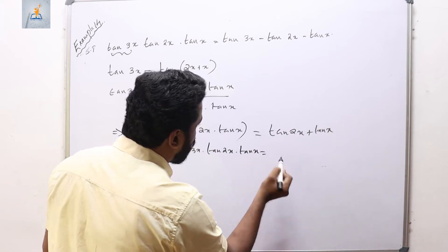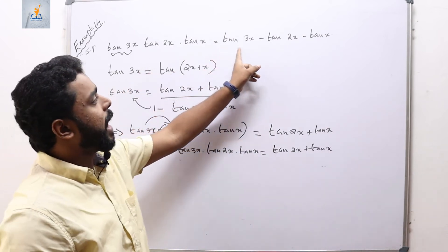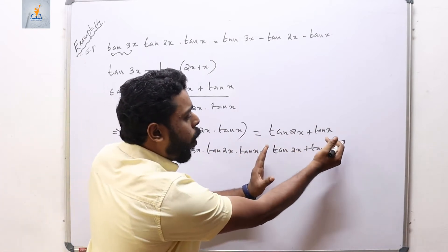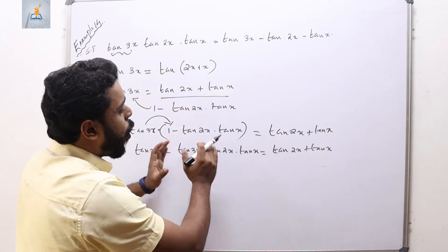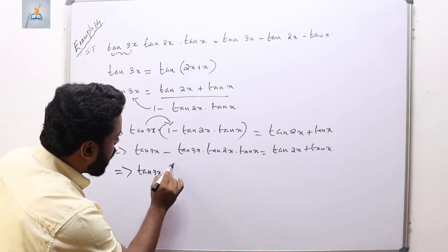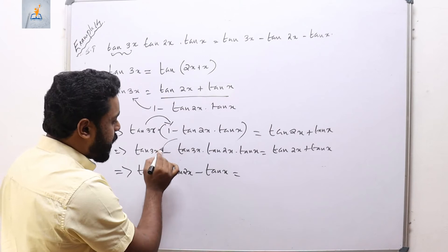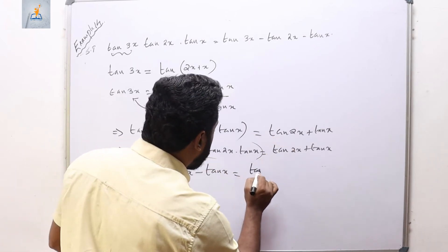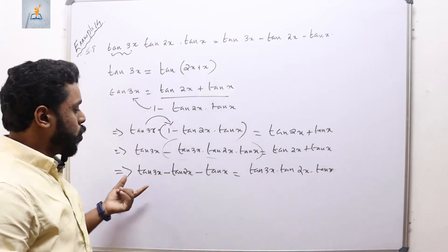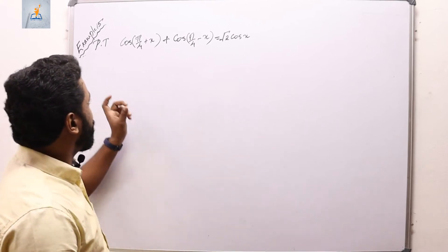Rearranging, tan(3x) − tan(2x) − tan(x) = tan(3x)·tan(2x)·tan(x), which is exactly the right-hand side we had to show. So LHS = RHS and the result is proved. Example 15: prove that cos(π/4 + x) + cos(π/4 − x) = √2·cos(x).